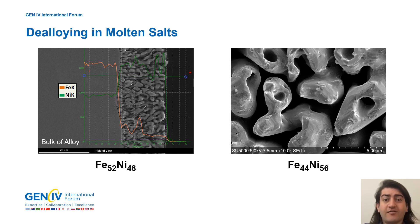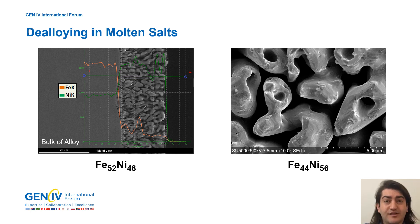I found that up to a certain temperature there is a dealloying of a type observed in aqueous solution also in molten salt, with porous morphology and a parting limit. The threshold for electrolyte dissolution of the less noble element in molten salt dropped by several percent compared with aqueous solution. This is due to the very fast surface diffusion of the more noble element in molten chloride salt.